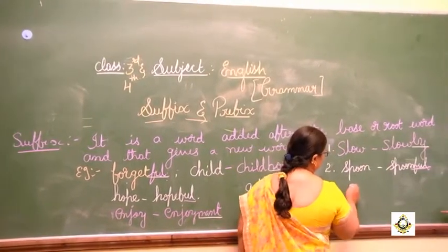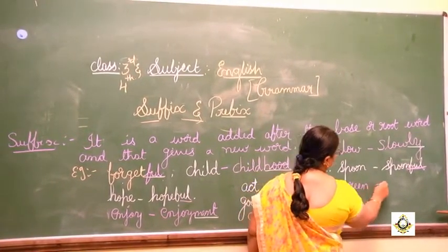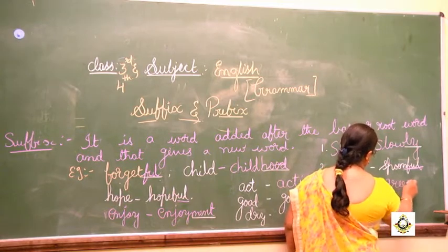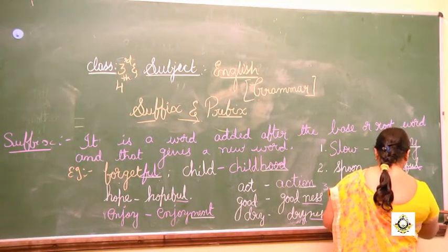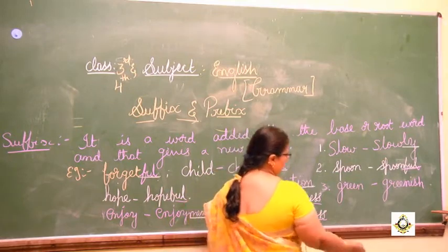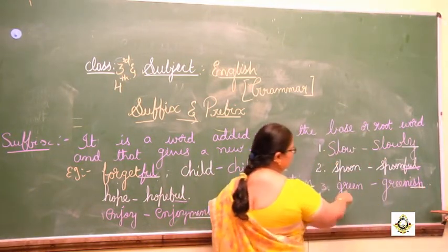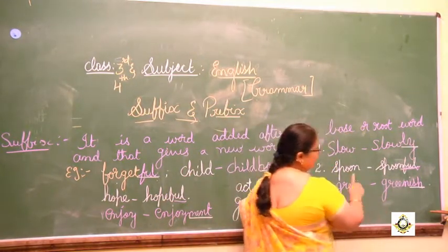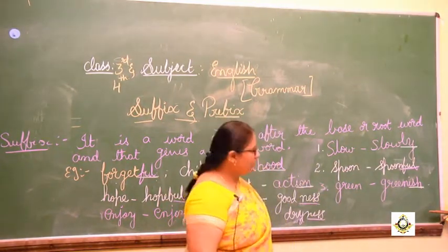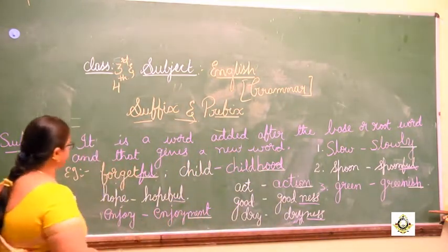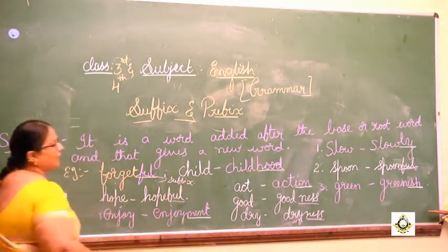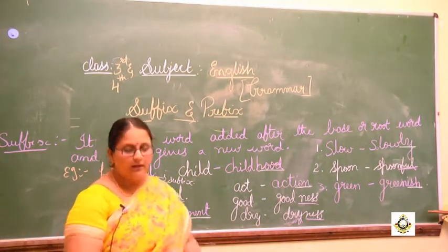Now let us see the adjective. G-R-E-E-N — 'green' is the base word. For this 'green' I will add I-S-H, giving 'greenish'. So 'green' is an adjective and we added the suffix 'ish'. So we can add suffixes to adverbs, nouns, and adjectives.